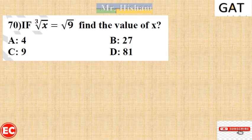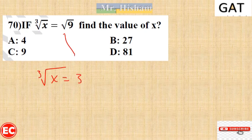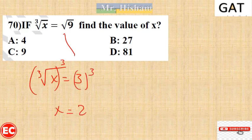Question 70: If the cube root of x equals the square root of 9, we know the square root of 9 is 3. To remove the cube root, raise both sides to the power of 3: x equals 3³ which equals 27.